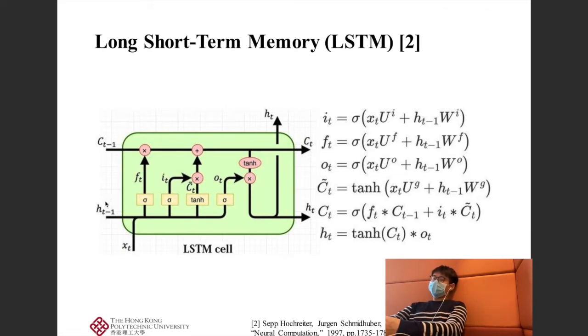As you can see, the input Xt with the previous hidden unit HT-1 are fed into the cell gates and then the output gate. The output gate controls how much information will go to the next hidden state, and CT controls the amount of information that will be stored in the next cell gate.